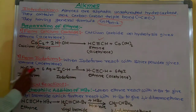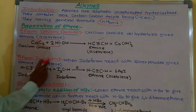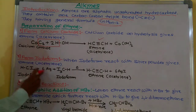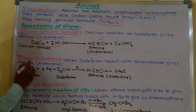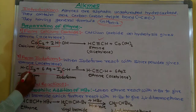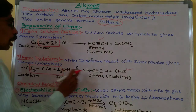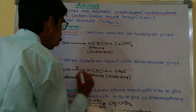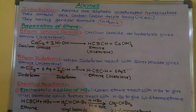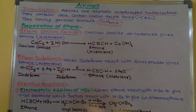Two molecules of chloroform (CHCl3) reacted with silver powder yield ethyne. When two molecules of chloroform react with silver powder, it gives ethyne or acetylene. So this is the second method for the preparation of ethyne.